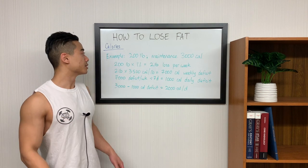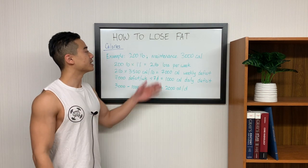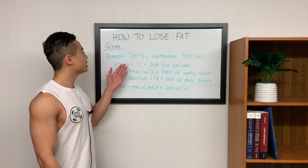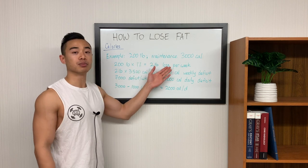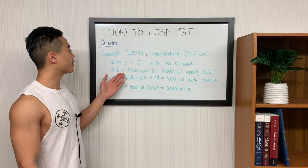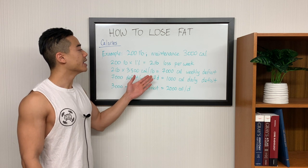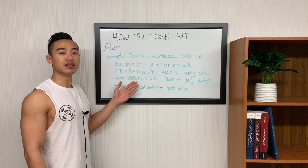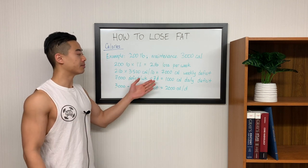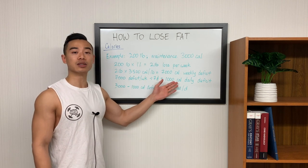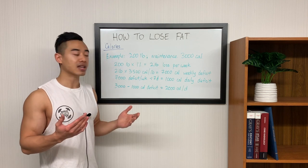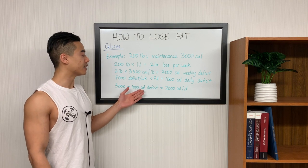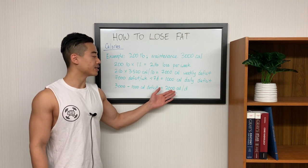Let's quickly run through an example. For our 200 pound person, let's say their maintenance calories are 3000 calories. If they want to lose weight at a rate of 1% per week, 200 pounds times 1% is 2 pounds of loss per week. And if you convert that using the 3500 calories per pound rule, that's 7000 calories of weekly deficit. If you convert 7000 calories of deficit across the whole week and divide that by 7 days, you'll need a 1000 calorie daily deficit. Once you have that daily deficit, you subtract from your maintenance calories. So 3000 minus 1000 calories of daily deficit means that you should be shooting for 2000 calories per day.